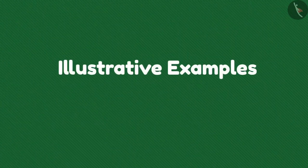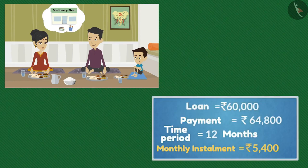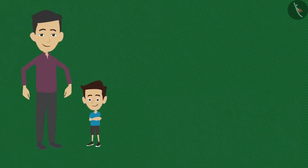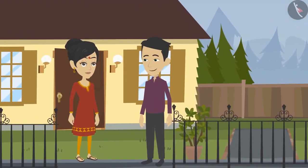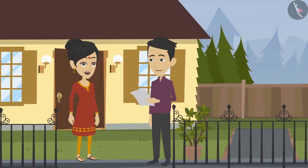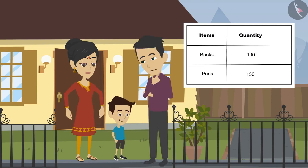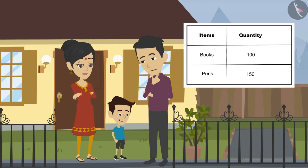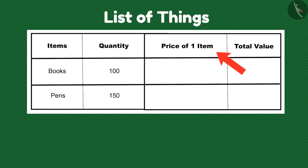Hello friends, welcome to this video. In the previous video, we learned how Ramu and his family were thinking about taking a loan to start a new venture. Today we will see how Ramu and Shyam are purchasing things for their shop. Before starting any work, we need to make a list of things needed. I have entered the number of items but need to enter the amounts to find out the total money required.